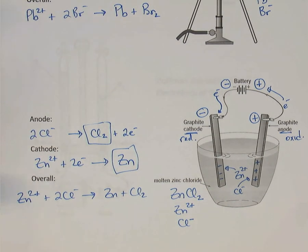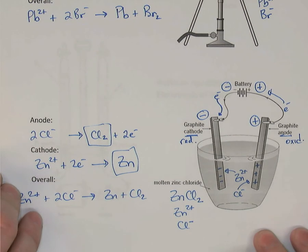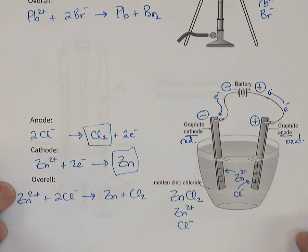The overall reaction: Zn2+ with two chloride ions makes Zn and Cl2. Electrolytic cells involving molten salts are relatively straightforward — the cation goes to the cathode and gets reduced, and the anion goes to the anode and gets oxidized.